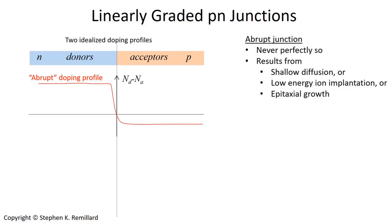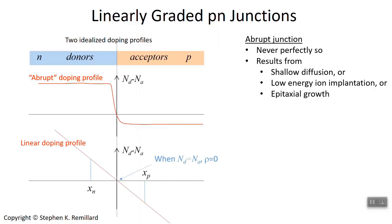The abrupt profile is nearly realized by certain methods, such as epitaxial growth where one atomic layer at a time is grown — perhaps P-type on the bottom and N-type on the top — giving a pretty close to abrupt junction. Other careful shallow low-temperature diffusion can give a tight junction. But for the most part, there's always some profile of the dopants. A more realistic model is the linear profile — the linearly graded junction, which we're going to talk about.